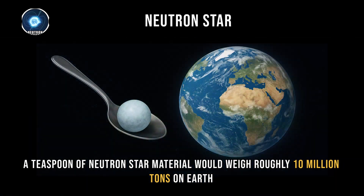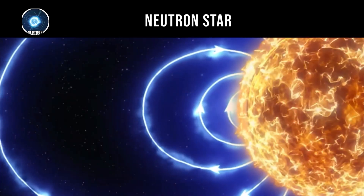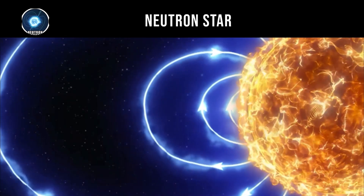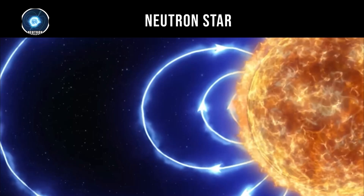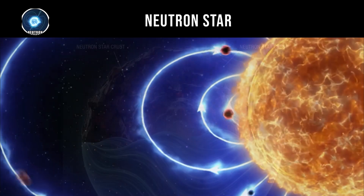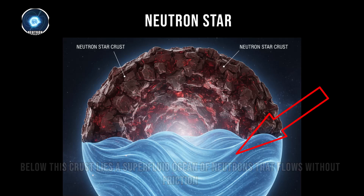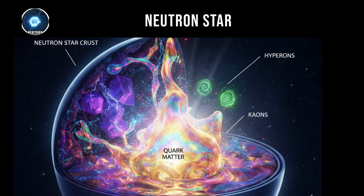A teaspoon of neutron star material would weigh roughly 10 million tons on Earth. The surface consists of a crystalline lattice of atomic nuclei and electrons, forming the strongest material known in the universe. Below this crust lies a superfluid ocean of neutrons that flows without friction. The core may contain exotic matter including hyperons, kaons, and possibly quark matter that cannot exist under normal conditions.